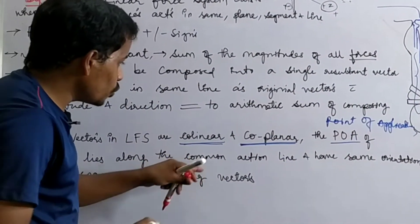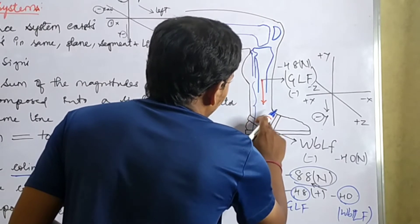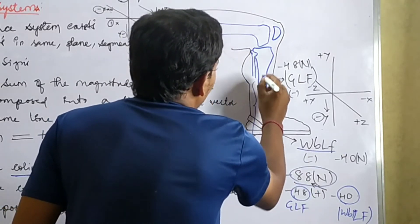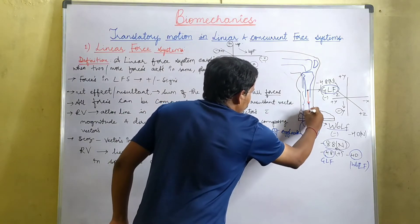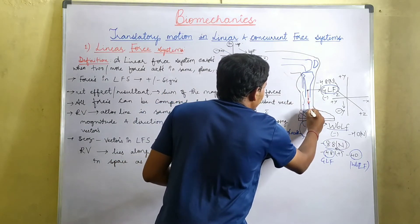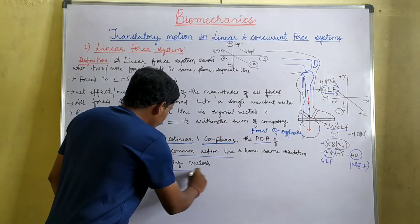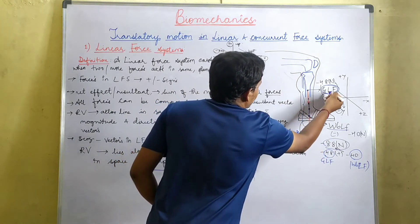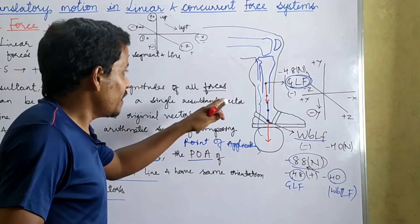The point of application of the resultant vector lies along the common action line. For example, removing the action line, this is clear — we have a point of application and the same orientation. The resultant vector also has the same orientation in space as the composing vectors, which is in the downward direction. The composing vectors are gravity on the leg-foot and the weight boot on the leg-foot segment.